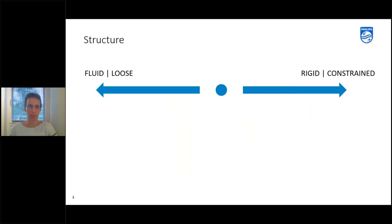So let's dive into the topic of structure. So when you talk about structure, then you could have imagined maybe an axis from all the way left to all the way right or the other way around. And where you could maybe at one end imagine there is no structure at all. It's very fluid and loose. And at the opposite side, it's very rigid and constrained.